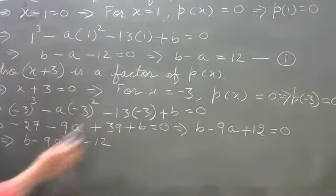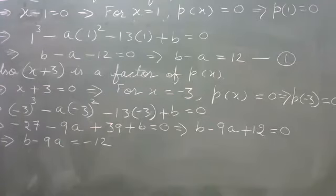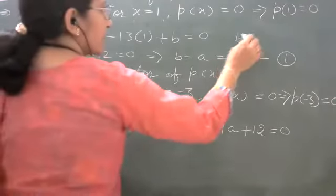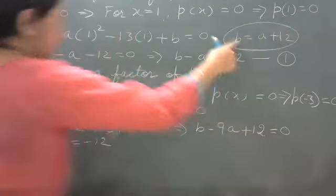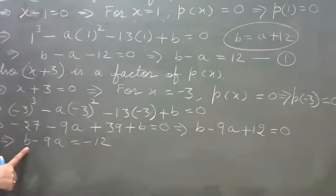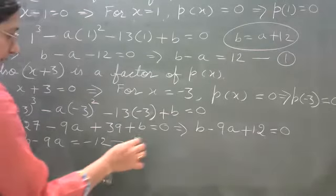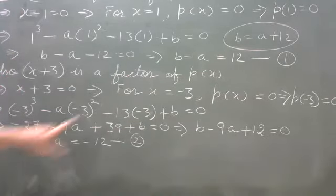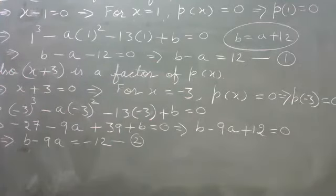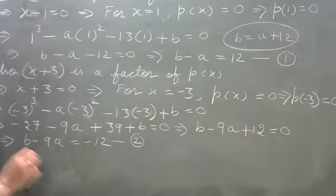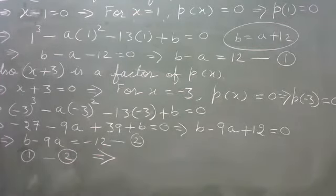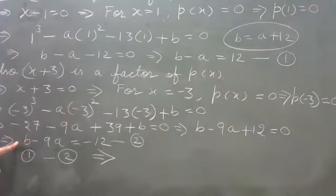To solve these two equations, we can subtract equation 2 from equation 1 because both have b and a. Subtracting equation 1 minus equation 2: since b appears in both, subtracting eliminates b and leaves only a. The signs of equation 2 change: b minus b cancels, leaving minus a plus 9a, that is 8a equals 12 plus 12, which is 24.